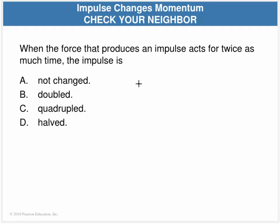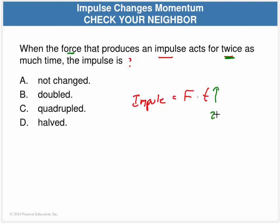Consider this: if we have an impulse where the force acts for twice as long, what happens to the impulse? Since impulse equals force times time, and the force stays the same but the time doubles, the impulse also doubles.